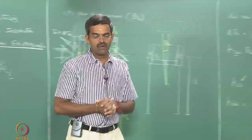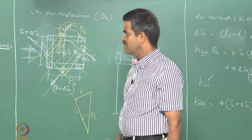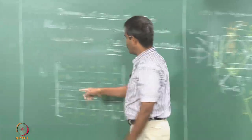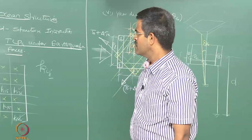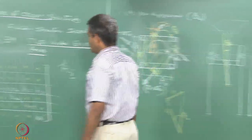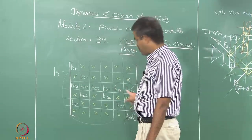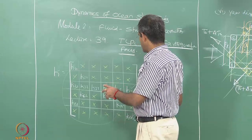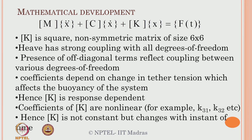We can now discuss the salient points of the stiffness matrix. K is a square 6×6 matrix. It has non-symmetricity: K31 is present but K13 is not. So K is non-symmetric or asymmetric. Giving unit displacement in any degree — surge, sway, heave, roll, pitch, or yaw — automatically invokes a force in the heave degree. Heave is strongly coupled with all degrees of freedom.